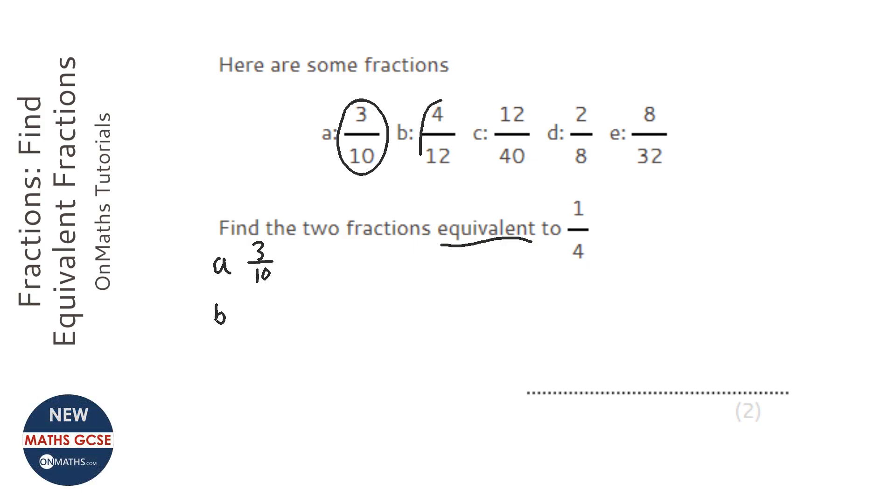On B, I can divide top and bottom by 4. So that cancels down to be 1 over 3.